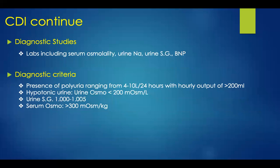Diagnostic studies include obtaining a serum osmolarity, urine sodium, urine-specific gravity, and a BNP. Diagnostic criteria include polyuria ranging from 4 to 10 liters per 24 hours with an hourly output greater than 200 milliliters, hypotonic urine with urine osmolarity less than 200 milliosmoles per liter, urine-specific gravity of 1.000 to 1.005, and a serum osmolarity greater than 300 milliosmoles per kilogram.